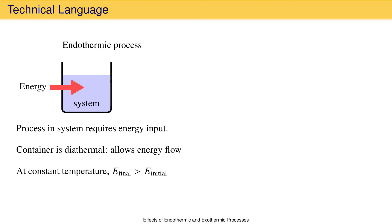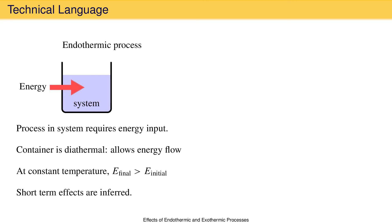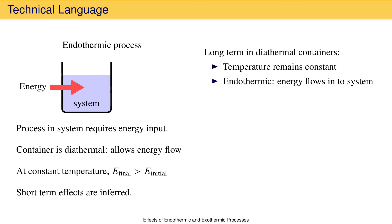Obviously, energy cannot enter from the surroundings if the container does not allow that. Saying that the container is diathermal means that it is possible for energy to flow in from the surroundings, which means it is possible for the temperature to be the same at the start and end of the process. If it does remain the same, then an energy input means that the energy of the system increases, just as we have learned. Keep in mind, this is all about the long term — what happens when sufficient time has passed? In the short term, every chemist will just know and assume that energy cannot flow instantaneously, and that because of that, the temperature of the system will decrease until enough energy can flow in from the surroundings to return the temperature to its original value, making temperature constant. In other words, the short-term effects are inferred. In the long term, in a diathermal container, the temperature of the system will remain constant.